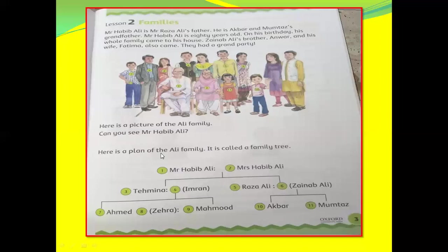Here is a plan of the Ali family. It is called a family tree. Number one: Mr. Habib Ali. Number two: Mrs. Habib Ali. Number three: Tahmina. Number four: Imran. Number five: Raza Ali. Number six: Zainab Ali. Number seven: Ahmed. Number eight: Zehra. Number nine: Mahmood. Number ten: Akbar. Number eleven: Mumtaz.